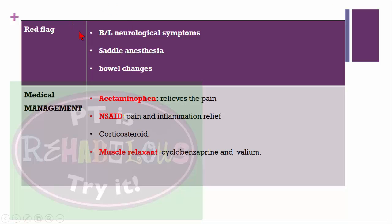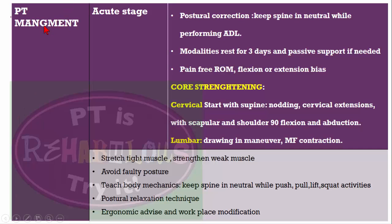Red flags in postural pain syndrome: if the patient has bilateral neurologic symptoms, do not give physical therapy — refer to doctor or orthopedic specialist. If the patient has saddle anesthesia and bowel/bladder changes indicating cauda equina lesion, refer for medical management. Medical management includes acetaminophen for pain relief, NSAIDs for pain and inflammation, corticosteroids, and muscle relaxants like cyclobenzaprine and Valium.